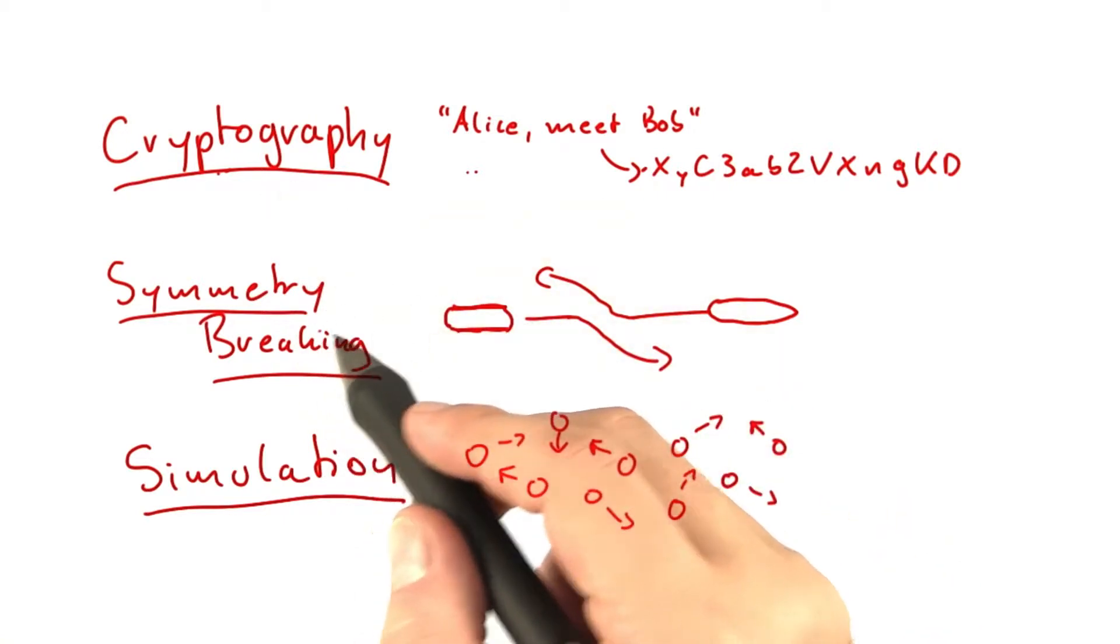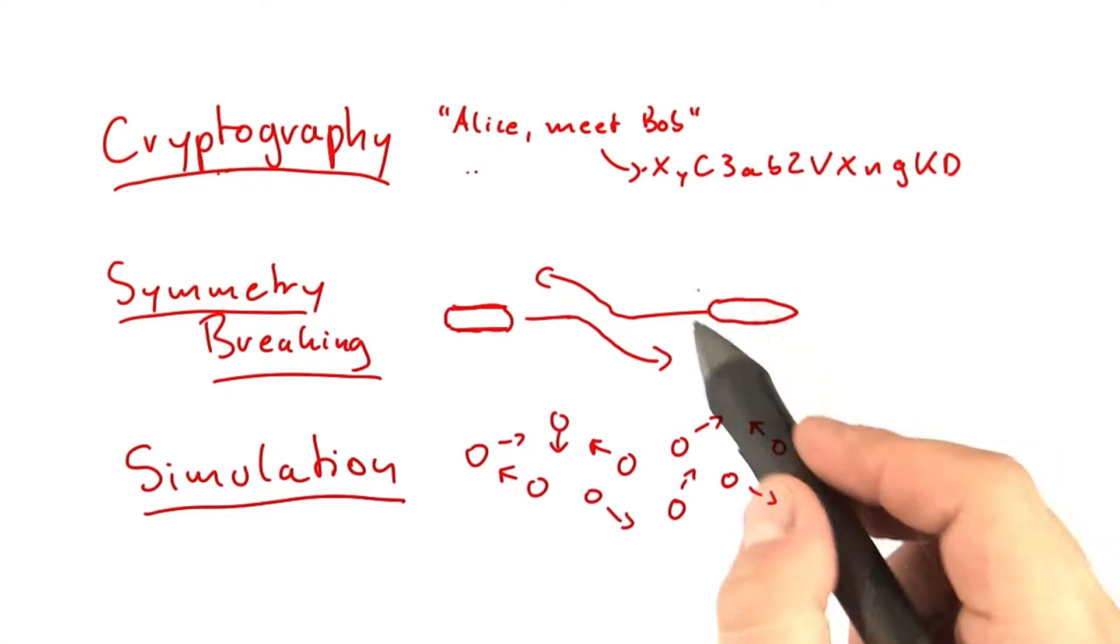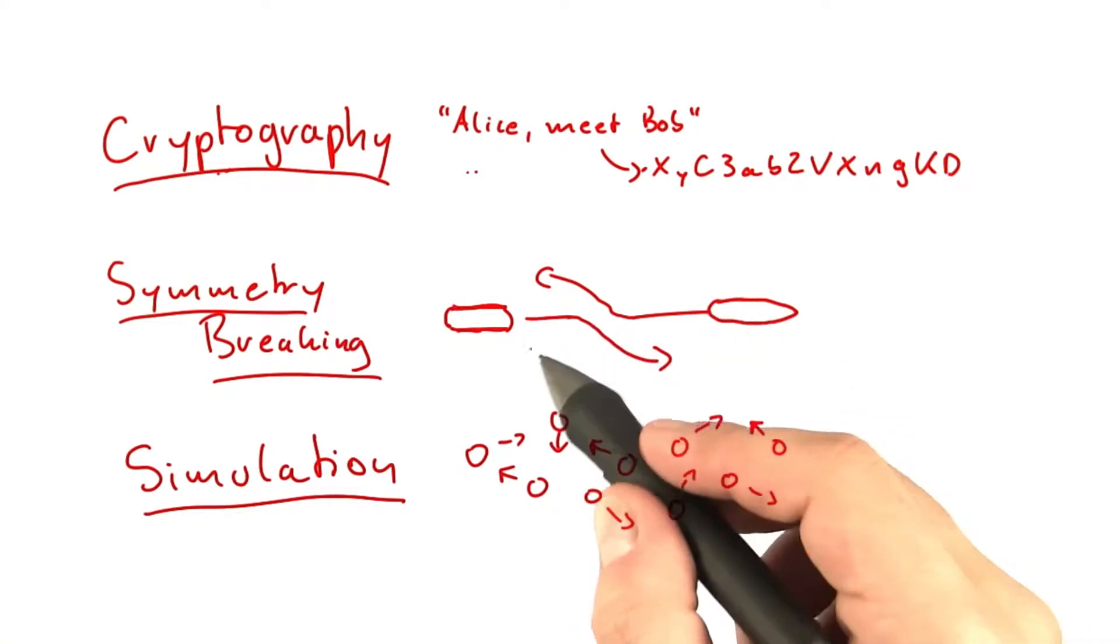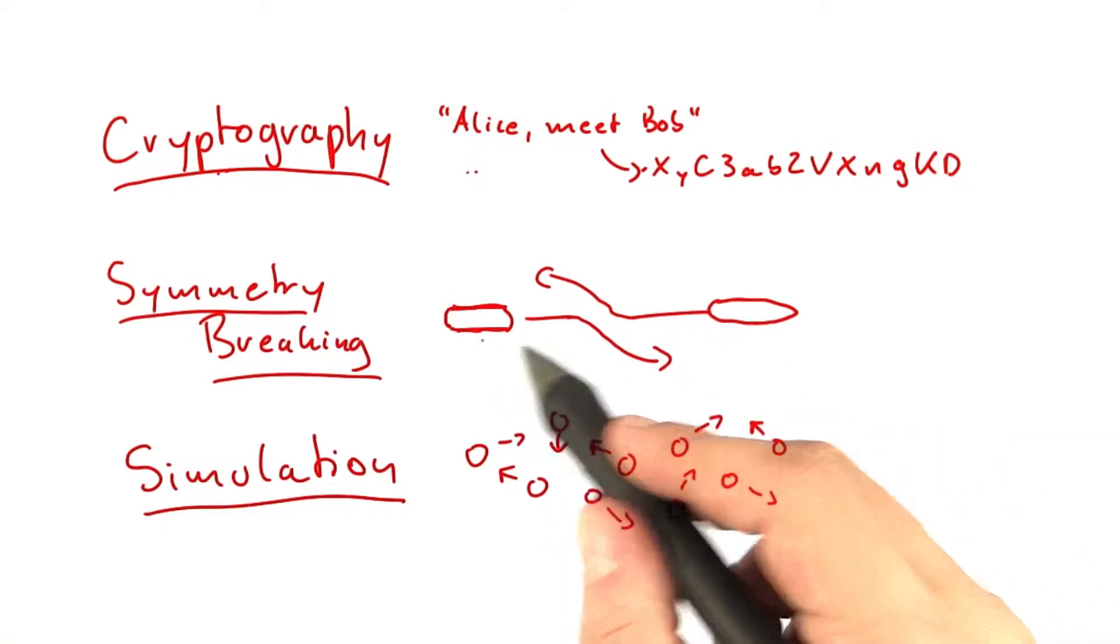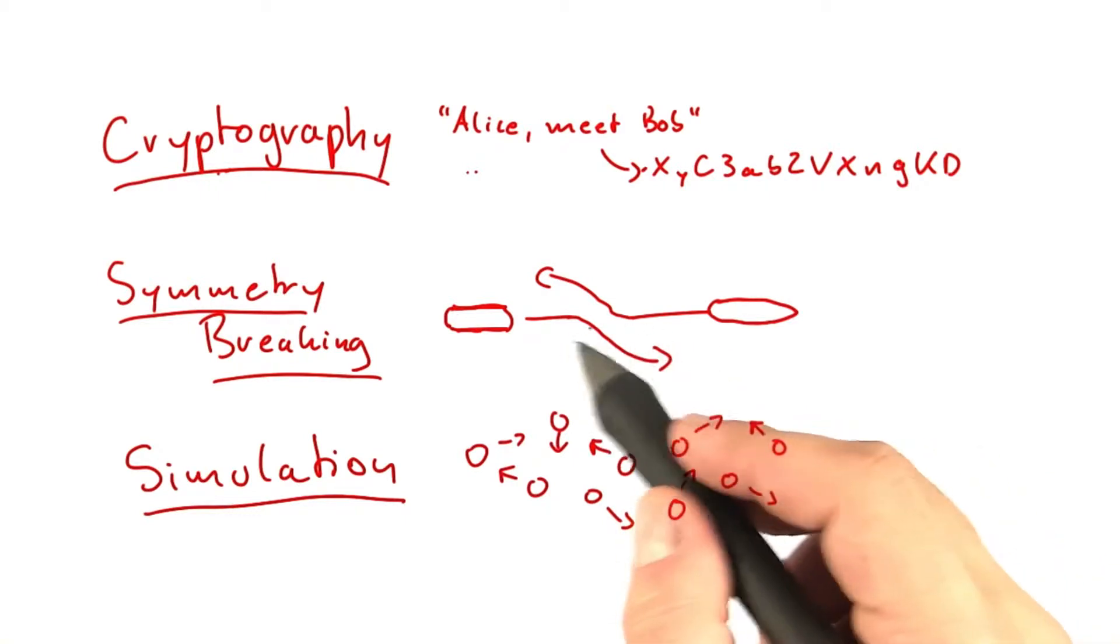You might have encountered randomness in something called symmetry breaking. Let's say you walk down a hallway and somebody comes in your direction and you're trying to get out of the way of that person, but the moment that you get out of the way that person also tries to get out of the way in the same direction. And so if you did not have random decisions, then you would almost certainly crash into each other.